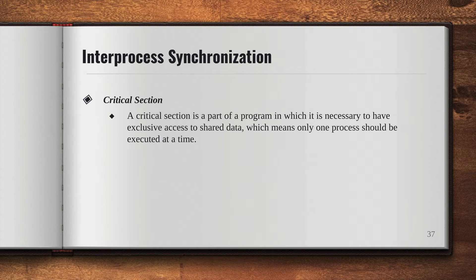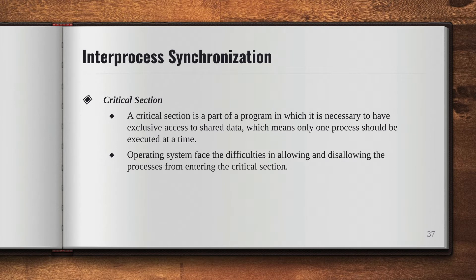A critical section is a part of a program in which it is necessary to have exclusive access to the shared data, which means only one process should be executed at a time and that shared data should be given to that process. There are certain problems that operating systems face in allowing and disallowing the processes from entering this critical section.